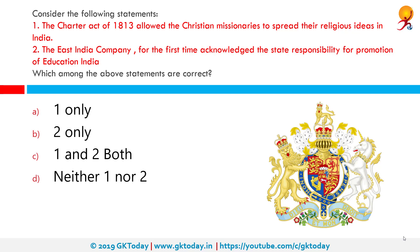Consider the following statements. Number one: the Charter Act of 1813 allowed the Christian missionaries to spread their religious ideas in India. Number two: the East India Company for the first time acknowledged the state responsibility for promotion of education in India. Which among the above statements are correct? Both of them are correct. The East India Company Act 1813, also known as the Charter Act 1813, was an act of the Parliament of the United Kingdom which renewed the Charter issued to the British East India Company and continued the company's role in India.